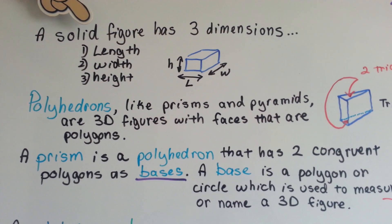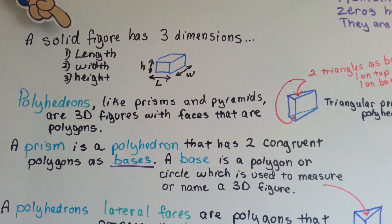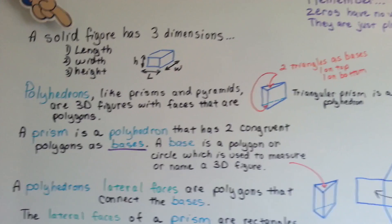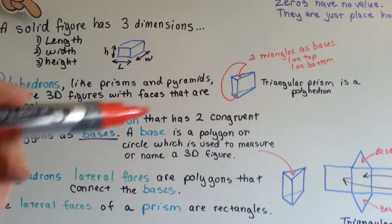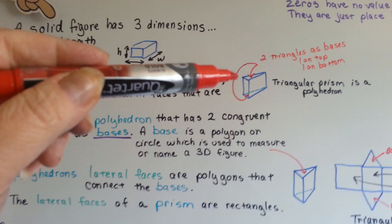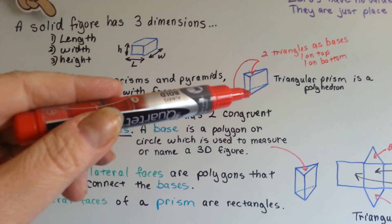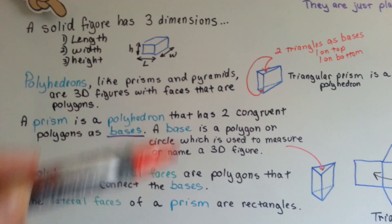Polyhedrons, like prisms and pyramids, are 3D figures with faces that are polygons. See this triangular prism right here? This is a polyhedron, and it's got a base for the top, a base for the bottom, and it's got rectangles for sides.